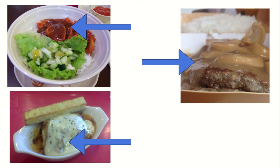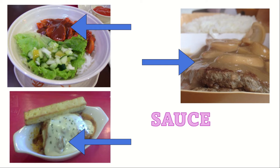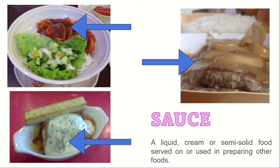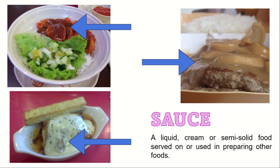Most especially, what the arrow is pointing to — are you familiar with those? These are called sauce. As you may recall from our previous lessons, what is sauce? It is a liquid, cream, or semi-solid food served on or used in preparing other foods. It is a semi-liquid food that is partnered or mixed with other foods to give them a more delicious taste — just like the foods in the pictures. Doesn't their flavor improve because of the sauce paired with them?